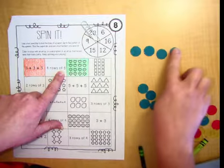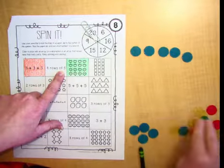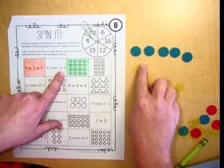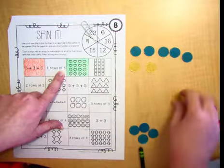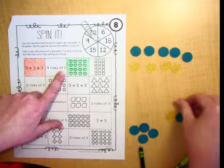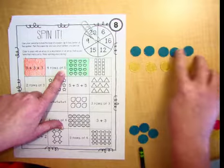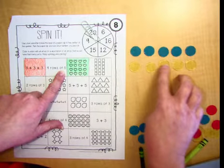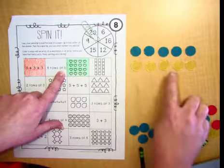So 1, 2, 3, 4, 5. 1, 2, 3, 4, 5. I need to make it a little neater, don't I? So there's 2 rows of 5.